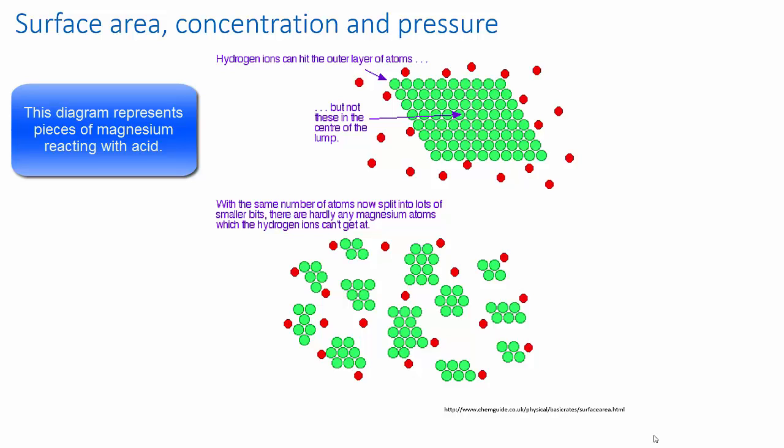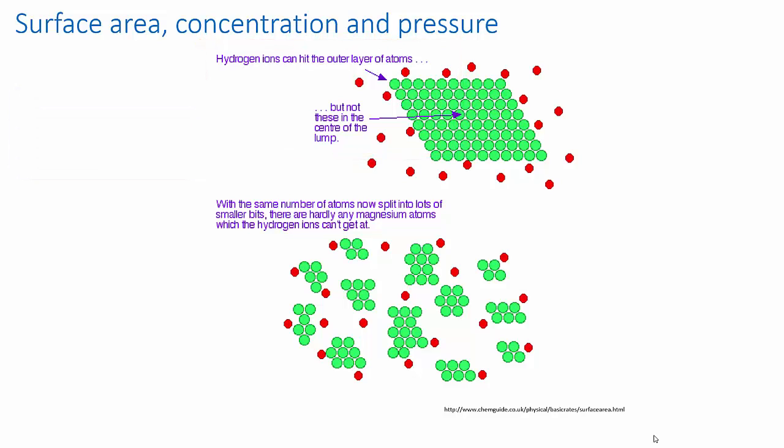But if the reaction is heterogeneous, the reactants are in two different phases, and the reactant collisions can only occur at the interface between those phases. So the number of collisions per unit time is reduced relative to the homogeneous case, and so is the reaction rate.